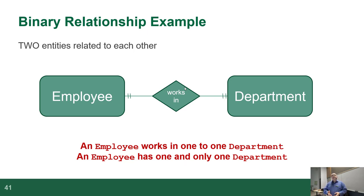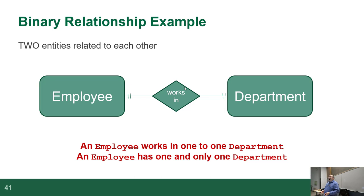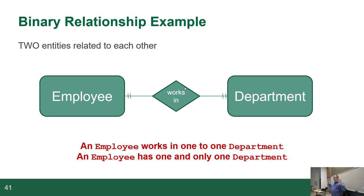A binary relationship is more along the lines of an employee that works in a department — an employee works in a department, a department has employees. An employee works in one and only one department and can only belong to one department. When we talk about a binary relationship, we're talking about a relationship that affects two entities. An employee could also have relationships to other things like projects, tasks, or skills, but each individual binary relationship just involves two entities.